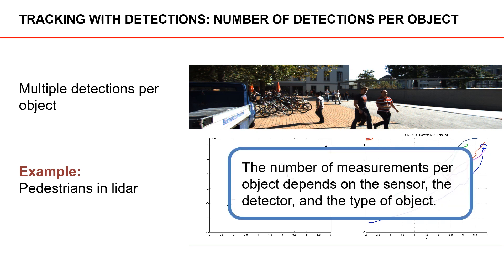In general, the number of measurements we get for an object in each time step depends on the sensor we use, the detector we use, and the types of objects we are tracking. Based on this variation in the number of detections per object per time step, we can define different types of tracking, which is what we will look at next.